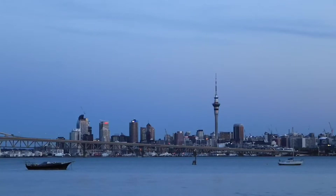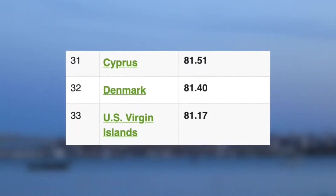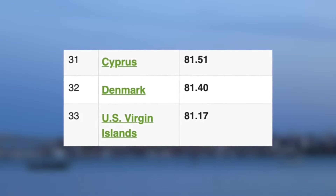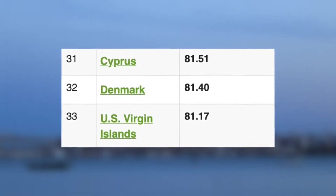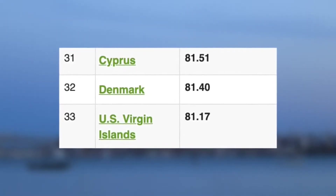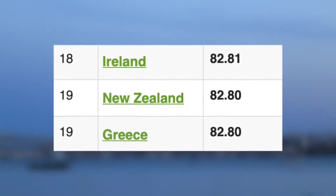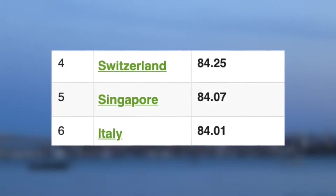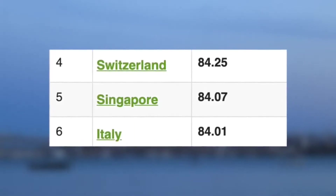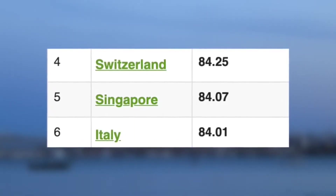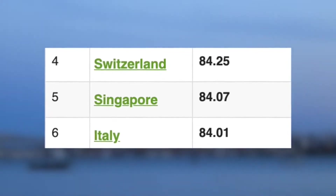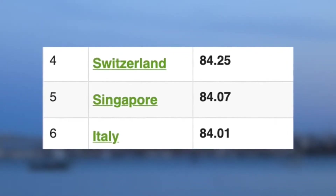Now let's move on to the overall life expectancy for a resident in these three countries. This is where all three countries excel. Starting off with the lowest, we have Denmark at an impressive 81.4 years, making them the 32nd highest in the world. Followed by New Zealand with 82.8, making them the 19th highest. And then the highest out of the three, Singapore, with a seriously impressive 84 years, making them the fifth highest anywhere on earth.